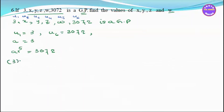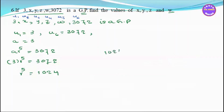Here r to the power 5 equals 3072 divided by 3, so r to the power 5 equals 1024, so r equals 4.